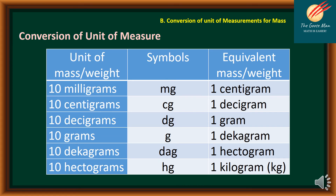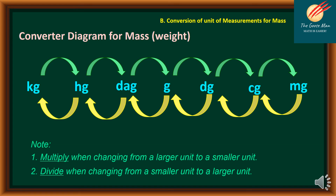Let's move on to the second part of conversion — this time we will cover conversion of units of measurement for mass. Here is the table showing units of mass or weight with their symbols and equivalents. We have: 10 milligrams equals 1 centigram. Using the converter diagram for mass or weight, we multiply when changing from a larger to a smaller unit, or move the decimal point to the right. We divide when changing from a smaller to a larger unit, or move the decimal point to the left.